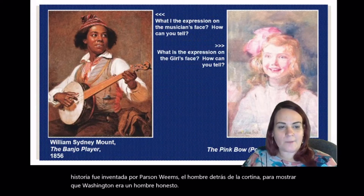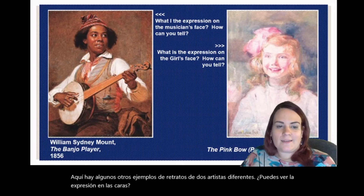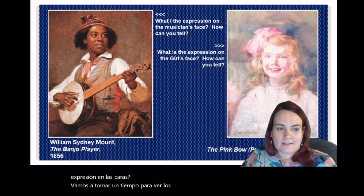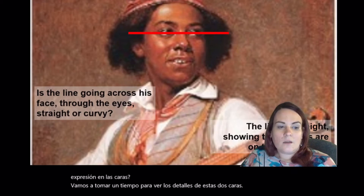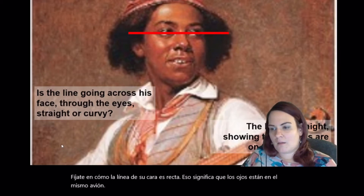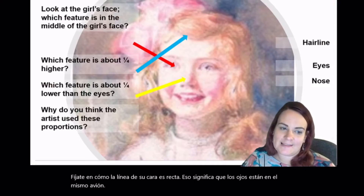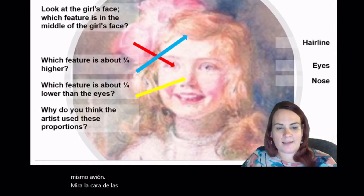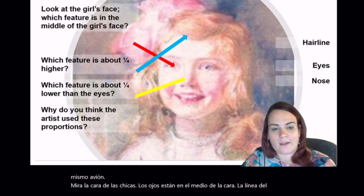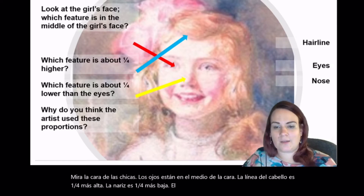Here are some other examples of portraits by two different artists. Can you see the expression in the faces? We're going to take some time to look at the details of these two faces. Notice how the line on his face is straight — that means the eyes are on the same plane. Look at the girl's face. The eyes are in the middle of the face, the hairline is a fourth higher, and the nose is a fourth lower. The artists use these proportions to make her look realistic.